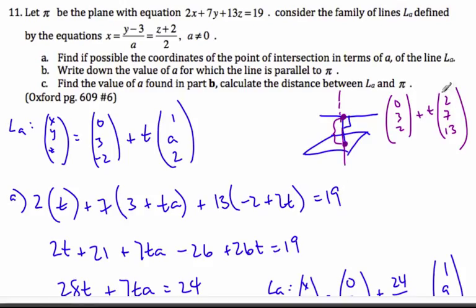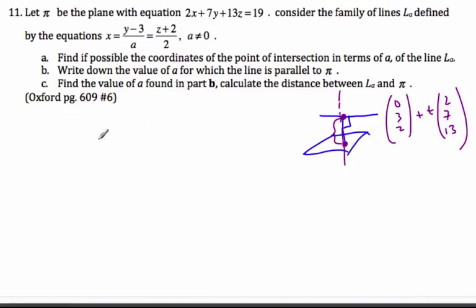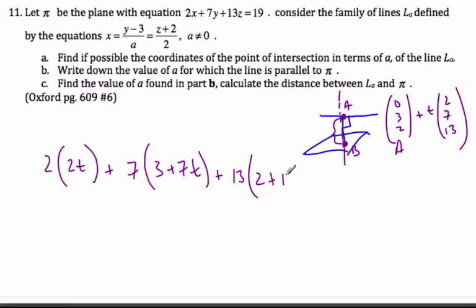To find that point of intersection, I plug this line into my plane equation. So it's 2(0+2t) plus 7(3+7t) plus 13(-2+13t) equals 19. I'm going to solve for t.